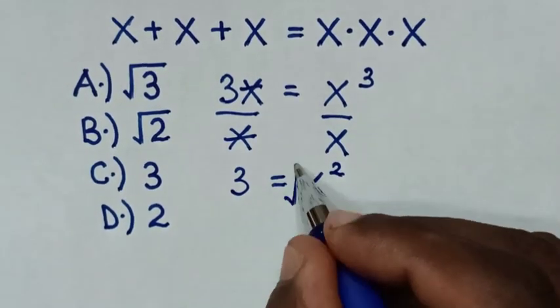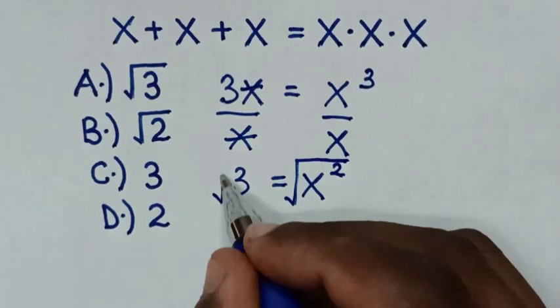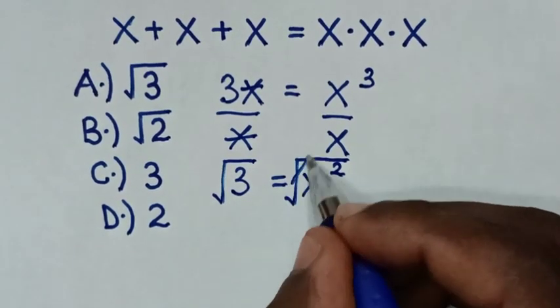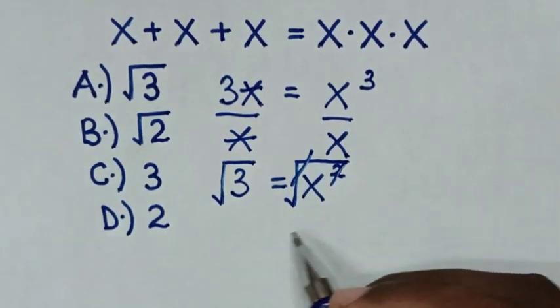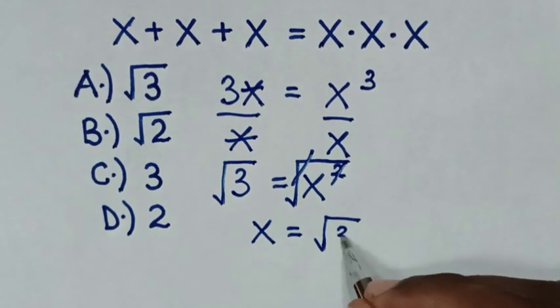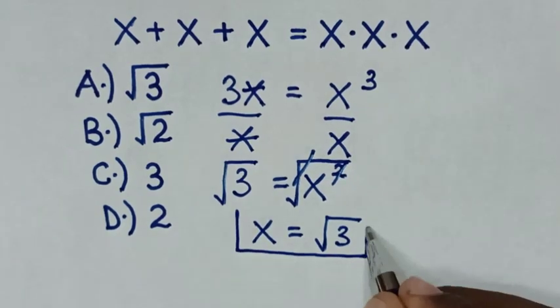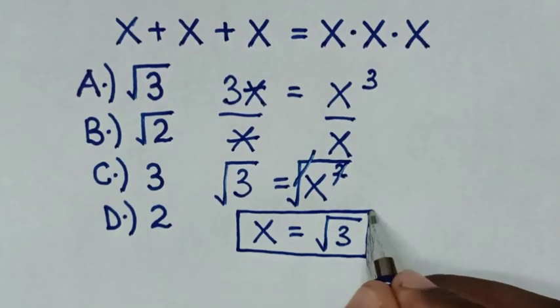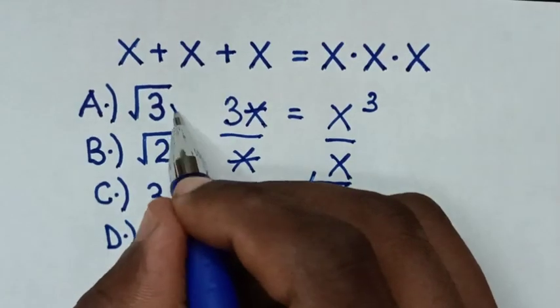Then we apply the square root on both sides. So this square root will cancel this square. Then it will be x equals square root of 3. So this is our final answer. Selecting the multiple choice, it is A.